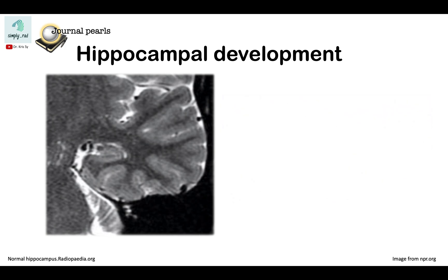Here is a coronal view of the brain, focused on the left temporal lobe. This is a T2 sequence. As you can see, the CSF or fluid is bright.